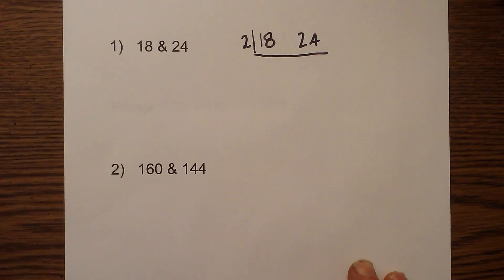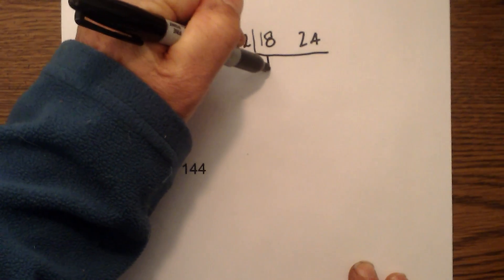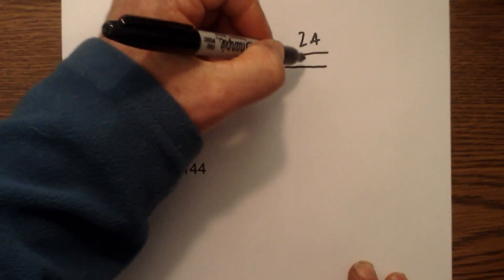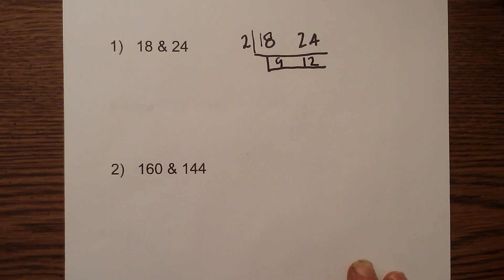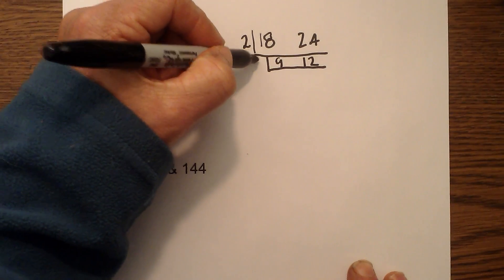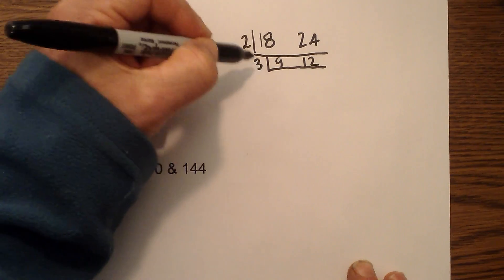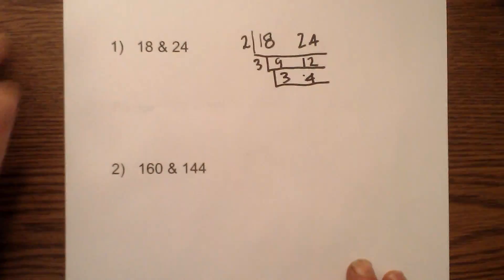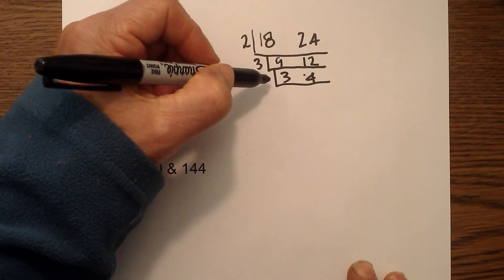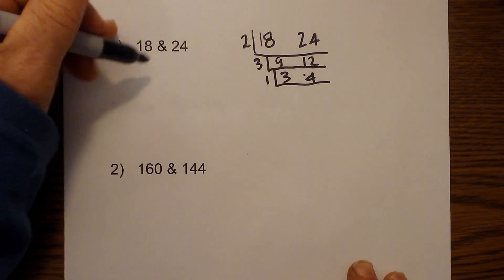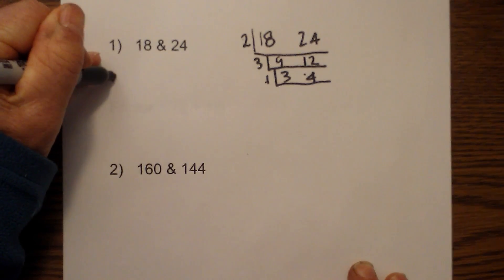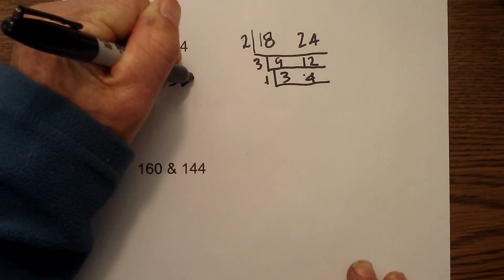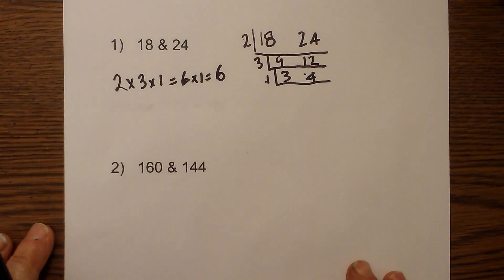I know that 2 will go into both of these because they end in an even number. You can use a larger number, but 2 will work. So 2 goes into 18 nine times, and 2 goes into 24 twelve times. Next, 3 will go into 9 and 12 evenly. So 3 goes into 9 three times, and 3 goes into 12 four times. Now the only number that will go into both evenly is 1. To find the GCF, I take the numbers on the outside and multiply them together: 2 times 3 times 1 equals 6. So the GCF is 6.